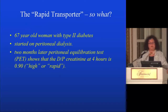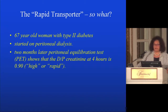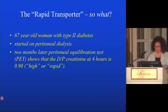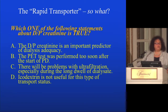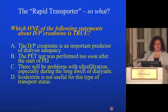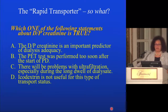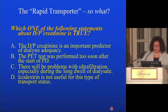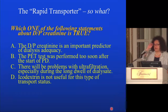A patient starts on peritoneal dialysis and has a peritoneal equilibration test that shows that the dialysis to plasma ratio of creatinine after a four-hour dwell is 90%, and this is a high or rapid transporter. Which one of these statements is the most correct? The D/P creatinine is an important predictor of adequacy of dialysis; the PET at two months was performed too soon after the start of PD; there may be problems with ultrafiltration especially during the long dwell, or icodextrin is not particularly useful for patients with rapid or high transport status. The answer is C.